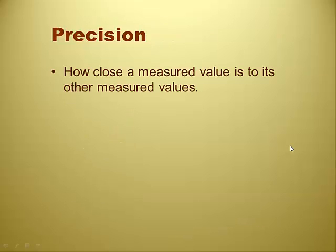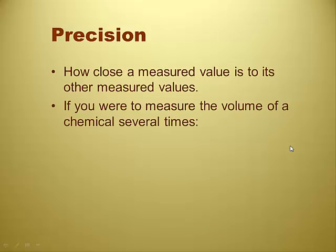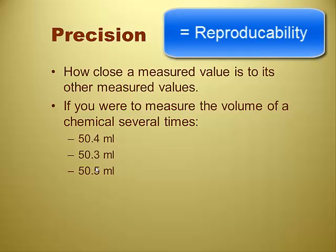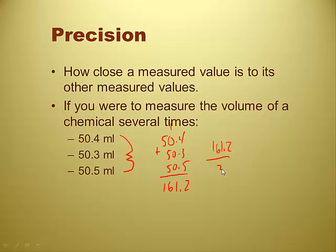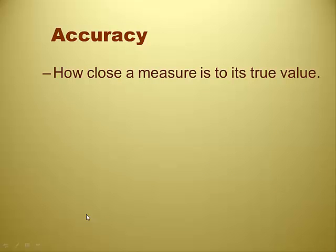Precision. How close a measured value is to its other measured values. If you were to measure the volume of a chemical several times, and 50.4 mils the first time, 50.3 mils the second time, 50.5 mils the third time, all three of them together is, that's pretty precise, isn't it? Is that precise? Because they're almost the same thing. It's almost the same thing, 50.4, 50.3, 50.5. Reproducibility, isn't it? Yeah, that's pretty good. That's pretty decent in a lab. Because what's the average here? You add up those three numbers and divide by three. Real quick here, 161.2. So on my handy-dandy calculator, I take 161.2, and I divide that by three, and I get 50.4.